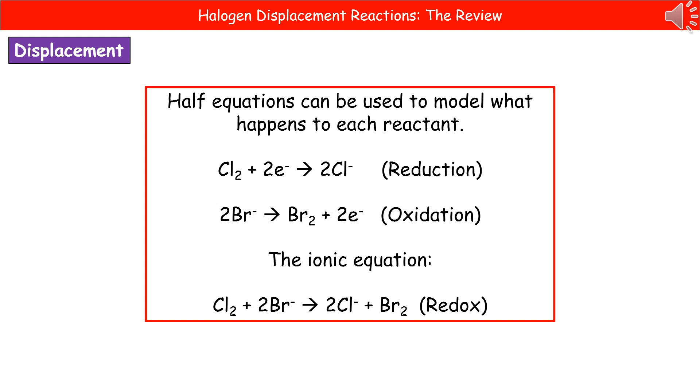If we look at the full ionic equation at the very bottom there, you can see we're only concerned with those bits that are reacting, so our chlorine and our bromine. So Cl2 plus 2Br- makes 2Cl- plus Br2. And because we've got one being reduced and the other being oxidized, that is an example of a redox reaction.